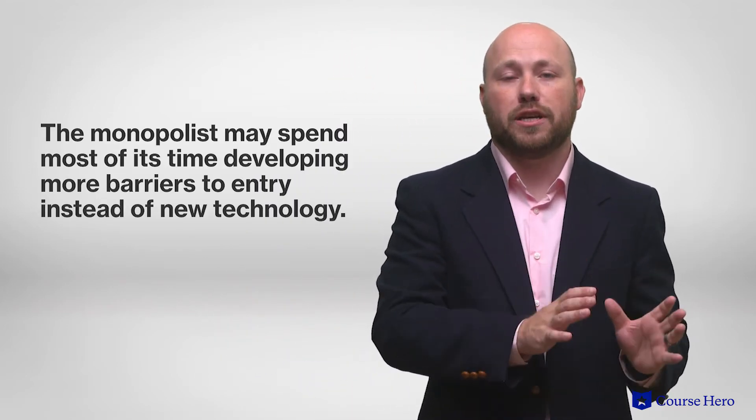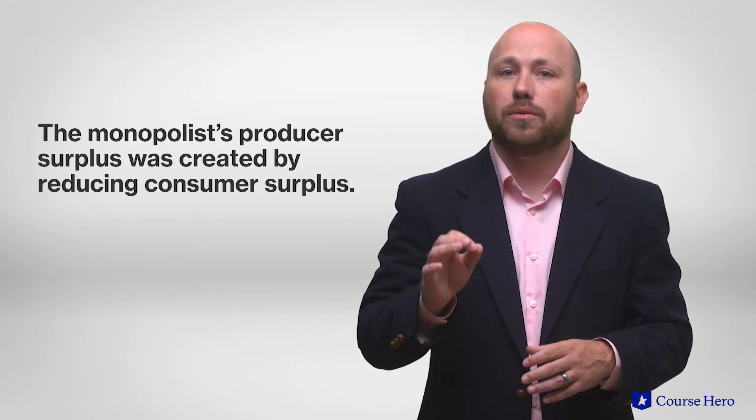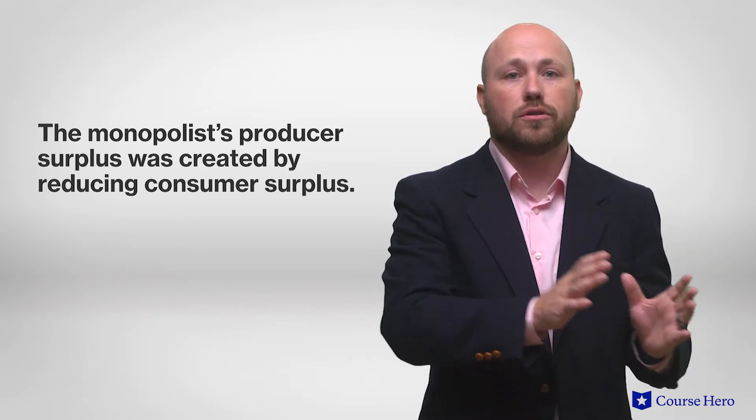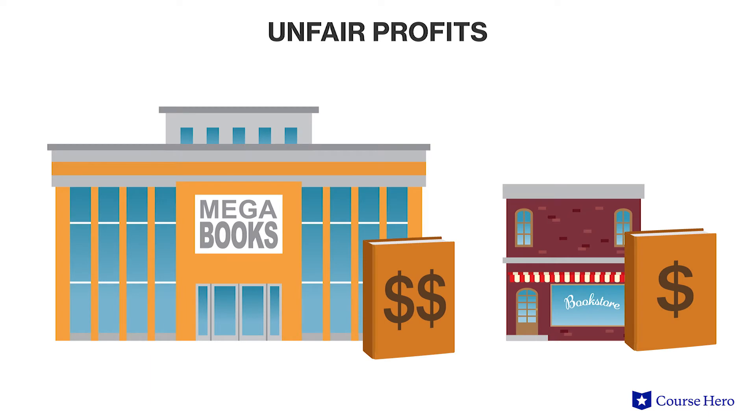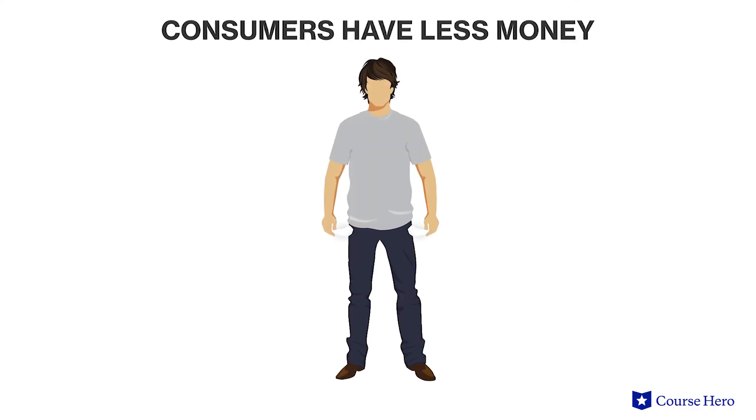In fact, as a way of maintaining its advantage, the monopolist may spend most of its time developing more barriers to entry instead of new technology. An unequal distribution of income is also possible, as the monopolist's producer surplus was created by reducing consumer surplus — a direct transfer of wealth from consumers to producers. Its higher profits could be seen as unfair, as they have been achieved by charging a higher price than a perfectly competitive firm could. This also reverberates through the wider economy: as a result of paying the monopolist higher prices, consumers have less money to spend elsewhere, affecting producers in other markets and limiting what consumers can afford to buy.